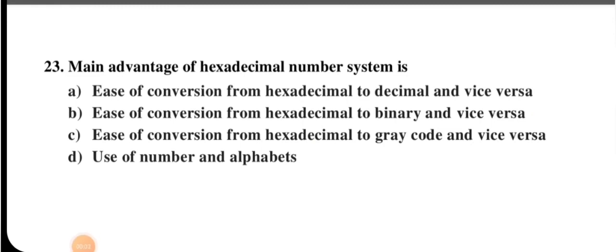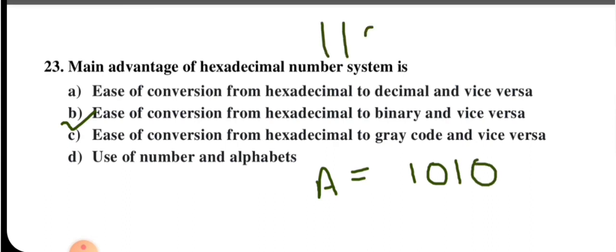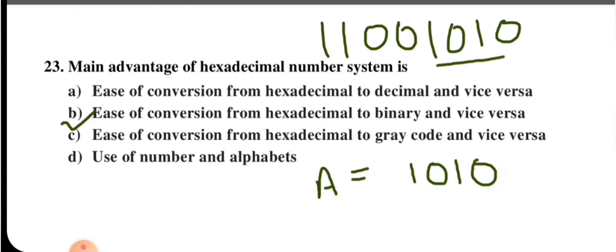The main advantage of hexadecimal numbers is the ease of conversion from hexadecimal to binary and vice versa. For example, grouping binary 11001010 into nibbles gives C and A, making conversion straightforward. Option B is the right answer.